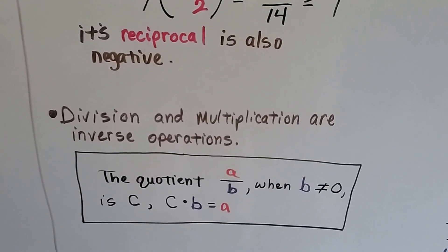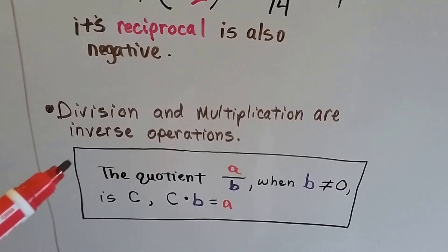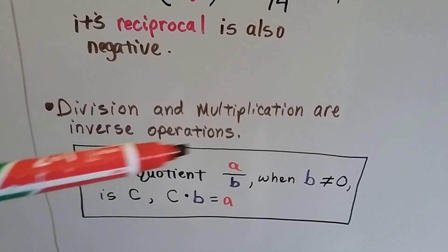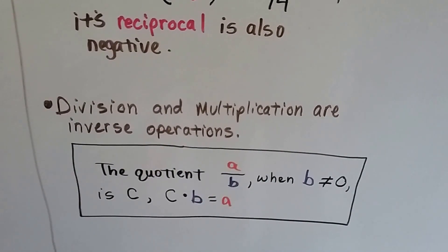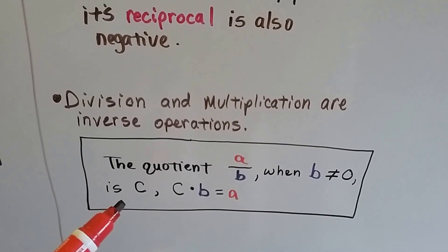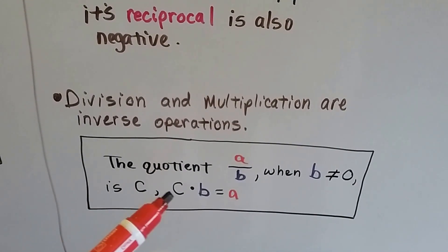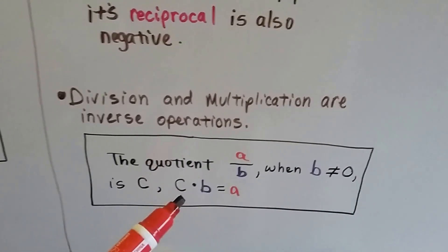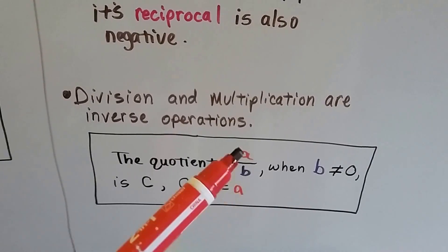Division and multiplication are inverse operations. The quotient a over b, that's a divided by b, when b is not 0. That's going to equal c. And we could do the reverse and do c times the b and get the a.